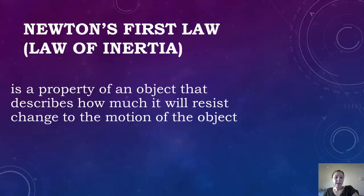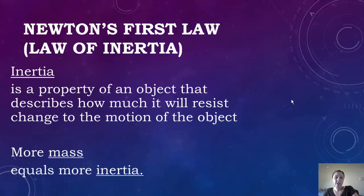The law of inertia, what exactly is inertia? Inertia can be described as a property of an object that describes how much it will resist change to the motion of the object. So basically, it's how much it will resist change. If you have more mass, then you're going to have more inertia.